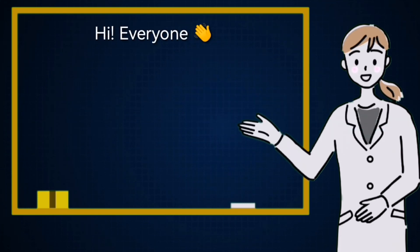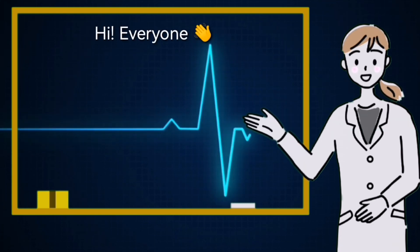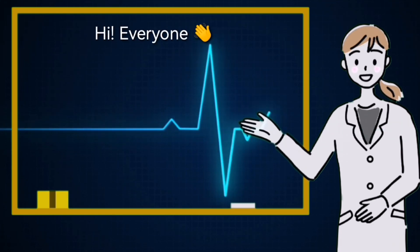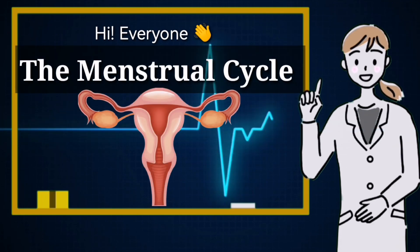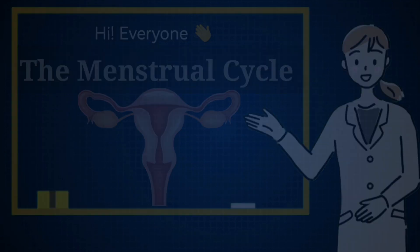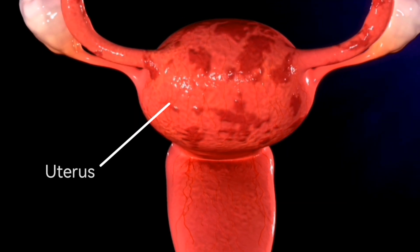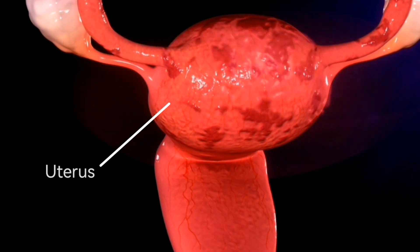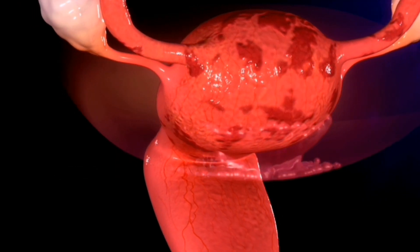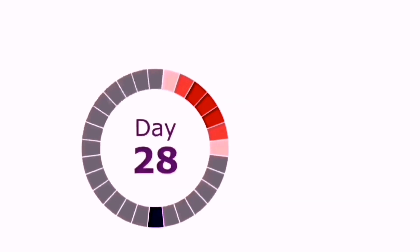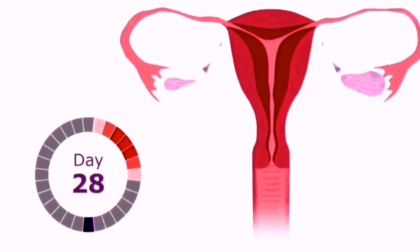Hi everyone and welcome back to my channel. Today we are going to talk about the menstrual cycle. The menstrual cycle is a monthly process that occurs in the female body where the uterus prepares itself for pregnancy. It usually lasts for about 28 days but can vary from person to person.